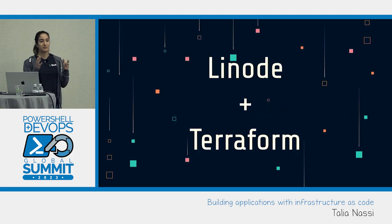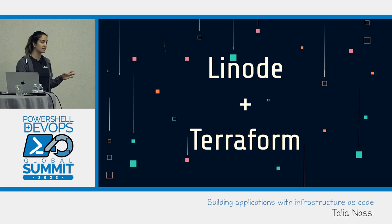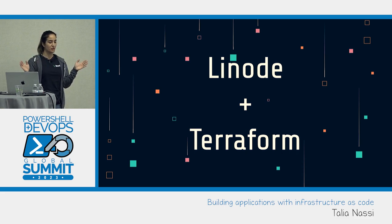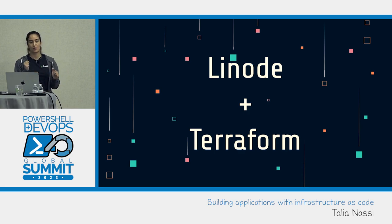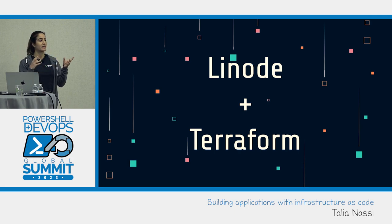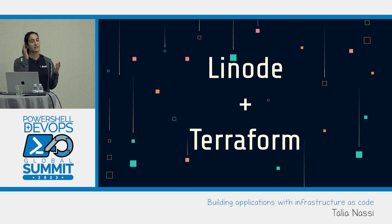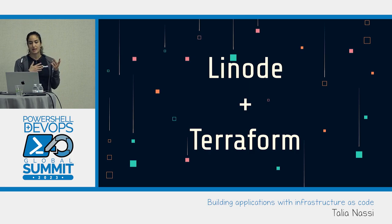So how do we actually implement infrastructure as code? There are a lot of tools you can use — I'll talk about a bunch of them later. But right now I'm going to talk about Linode and Terraform. Terraform is an infrastructure as code tool you can use for defining both cloud and on-prem resources, using configuration files that you can version, reuse, and share with whoever needs access.